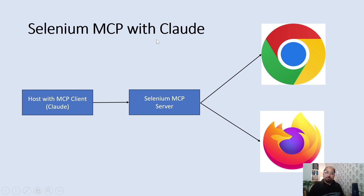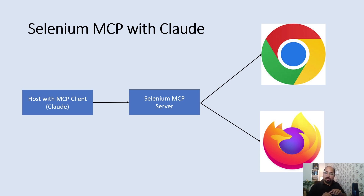With the help of Selenium MCP, what will happen is we will have Claude — that is an LLM, or any other LLM like Gemini — and we will have a Selenium MCP server. Integration will be established between the MCP client and the Selenium MCP server. Then within the LLM, we can write the requirement in natural language. For example, I will write 'open Chrome browser' and it would be able to open the Chrome browser.